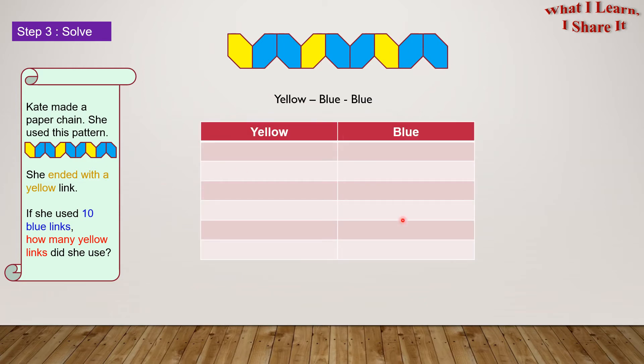And here is my table, and the two headers are yellow and blue. If there is one yellow link, then there are two blue links. If there are two yellow links, then there are four blue links. If there are three yellow links, then there are six blue links.